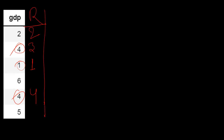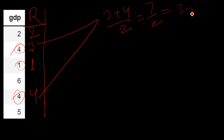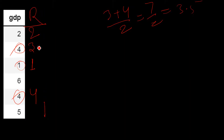Now you might ask: why give different ranks when two values are the same score? If these are players with the same score, they would rightfully fight over that. So we have a solution: we take their rank values and sum them up — three plus four divided by two gives us seven divided by two, which is 3.5. So both players get the same ranking of 3.5.